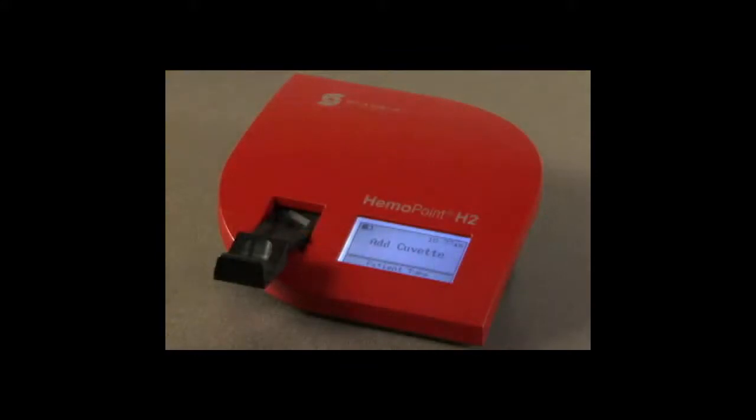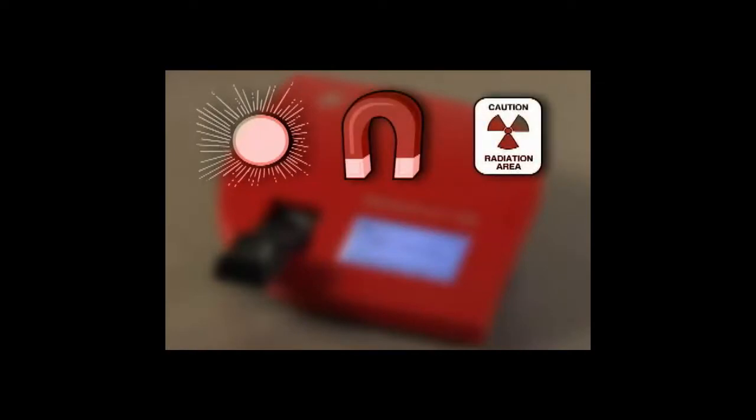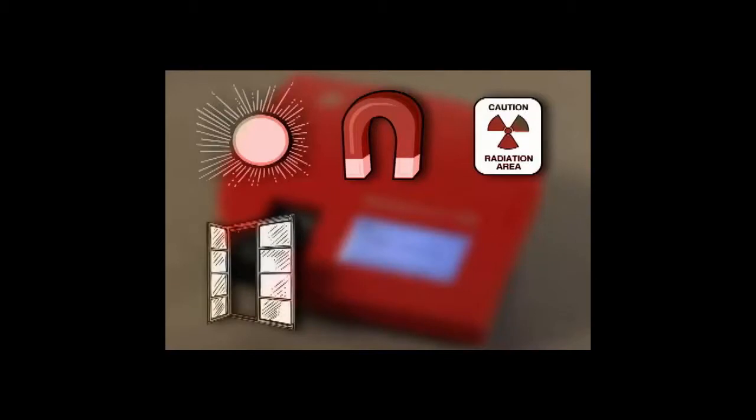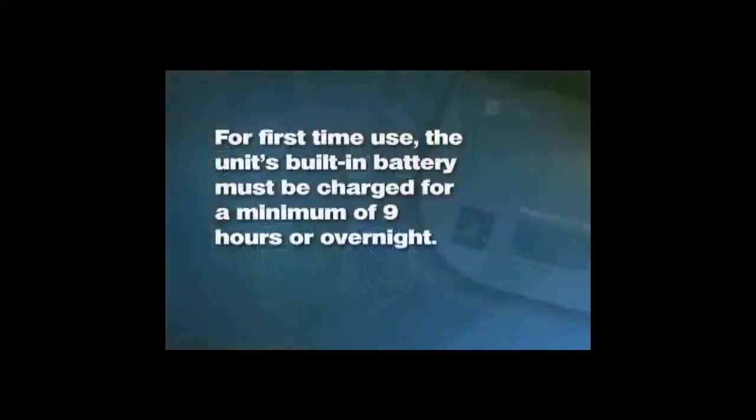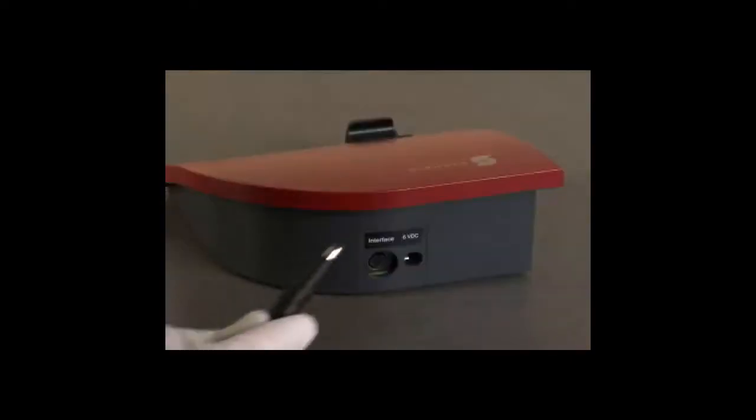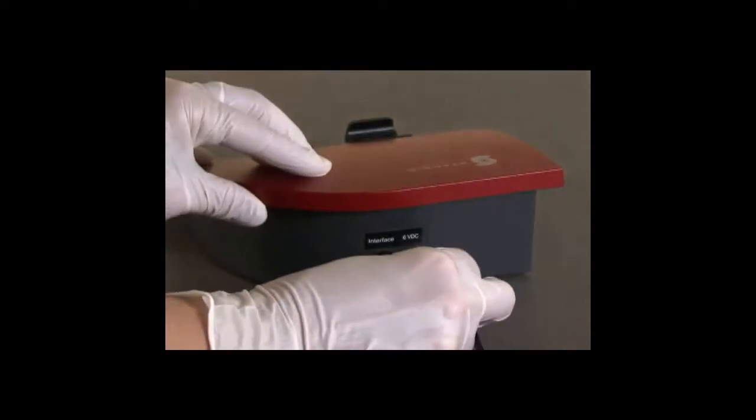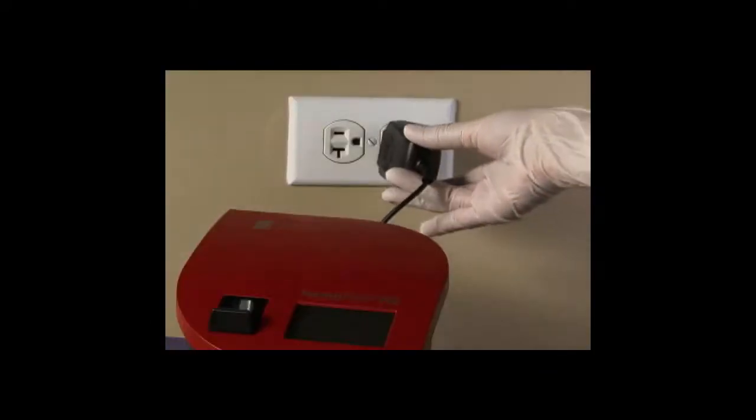Select a suitable place for setting up the photometer, one that avoids direct sunlight, strong electromagnetic fields, ionizing radiation, heaters, open windows, ventilators, fans, air conditioners, and wet areas such as a sink. For first-time use, the unit's built-in battery must be charged for a minimum of nine hours or overnight. Place the photometer on a level counter near a power socket. Plug in the supplied power adapter into the back of the unit and into the wall socket.